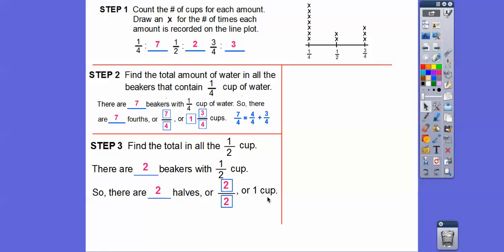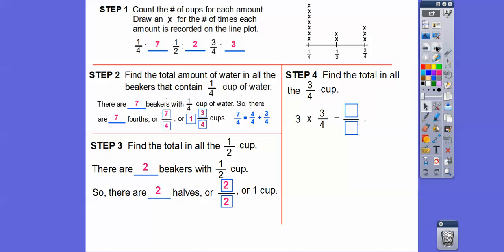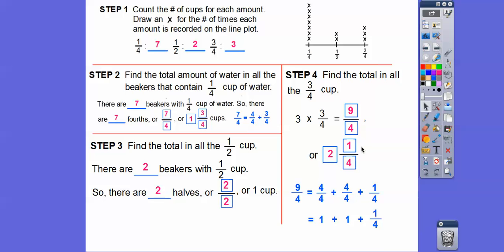We're going to use this number when we find the average — remember, we're going to add these numbers up and divide by how many beakers there were. Lastly, let's find the total amount in the three-fourths cups. There are three of them, so we multiply three times three-fourths, which gives us nine-fourths, or two and one-fourth. Nine-fourths is four-fourths plus four-fourths, which is eight-fourths, plus one more fourth — that's two plus one-fourth.